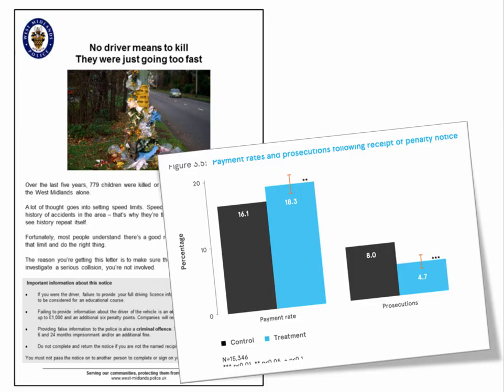Social norms matter. Trying to get drivers to pay their speeding fines and respond to penalty notices — how the reminder is framed in its social context is really quite important. A trial aimed to reduce re-offending and improve compliance with traffic penalties amongst those who'd failed to pay within 28 days included a letter with a picture of flowers, presumably at a site where somebody had died as a result of speeding. There was a non-trivial increase in repayments from 16.1% to 18.3%, and also a fall in the rate of prosecutions thereafter — some evidence that this kind of appeal to social norms does work.